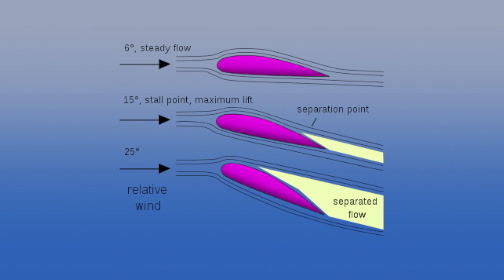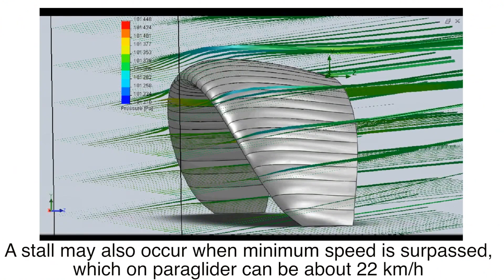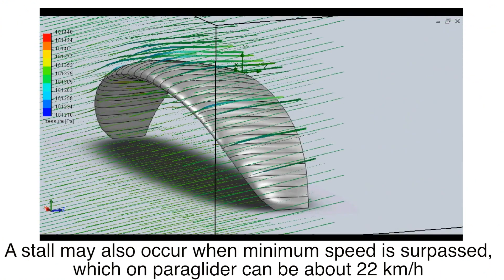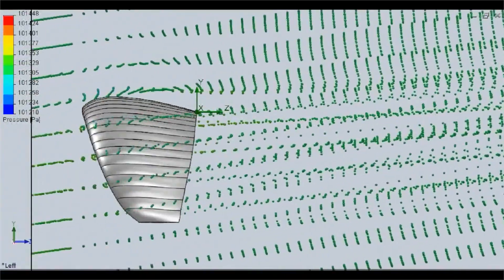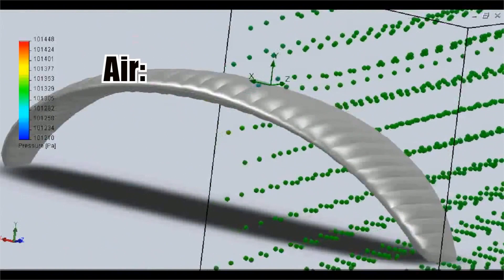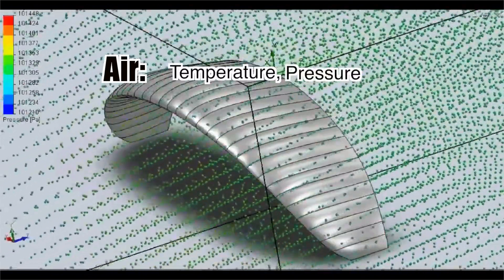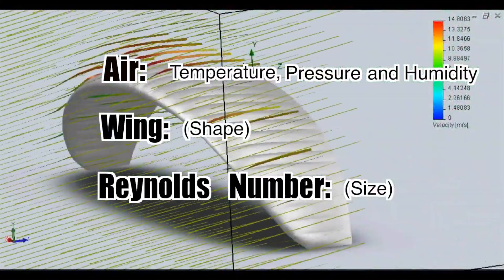What is a stall? A stall occurs when the critical angle of attack of the foil is exceeded. The critical angle of attack is typically about 15 degrees. A stall may also occur when minimum speed is surpassed, which on a paraglider can be about 22 km per hour — but it may vary significantly depending on differences in air temperature, pressure, humidity, wind, and Reynolds number.